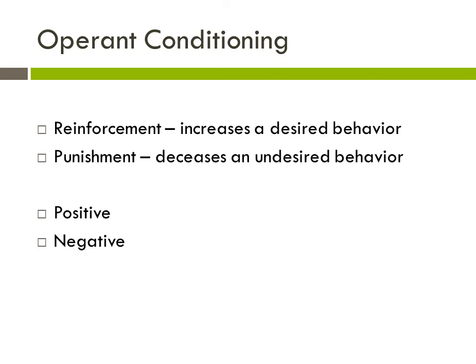The important thing to remember about operant conditioning is that we have different types of reinforcement and punishments. Reinforcement means we're always increasing a desired behavior. A punishment is always decreasing an undesired behavior. The idea behind positive and negative is not good or bad — positive means we are adding something, and negative means we are taking it away.